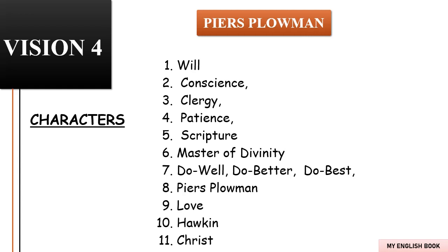Vision Four: Will spends several years wandering as a hermit in strange dreams. One day Will slips into yet another dream. In Vision Four, he is invited to a dinner party with Conscience, Clergy, Patience, and Scripture, as well as a new character — the Master of Divinity. At the feast, the Master gluttonously stuffs himself with rich, fattening food and fine wine, while Patience and Will are given only simple and sorrowful food. Will asks the Master for his explanation of Do Well, Do Better, and Do Best, which turns out to be centered on obeying the clergy and teaching other people. The mood grows tense and Will openly criticizes the Master's rude behavior at the feast.